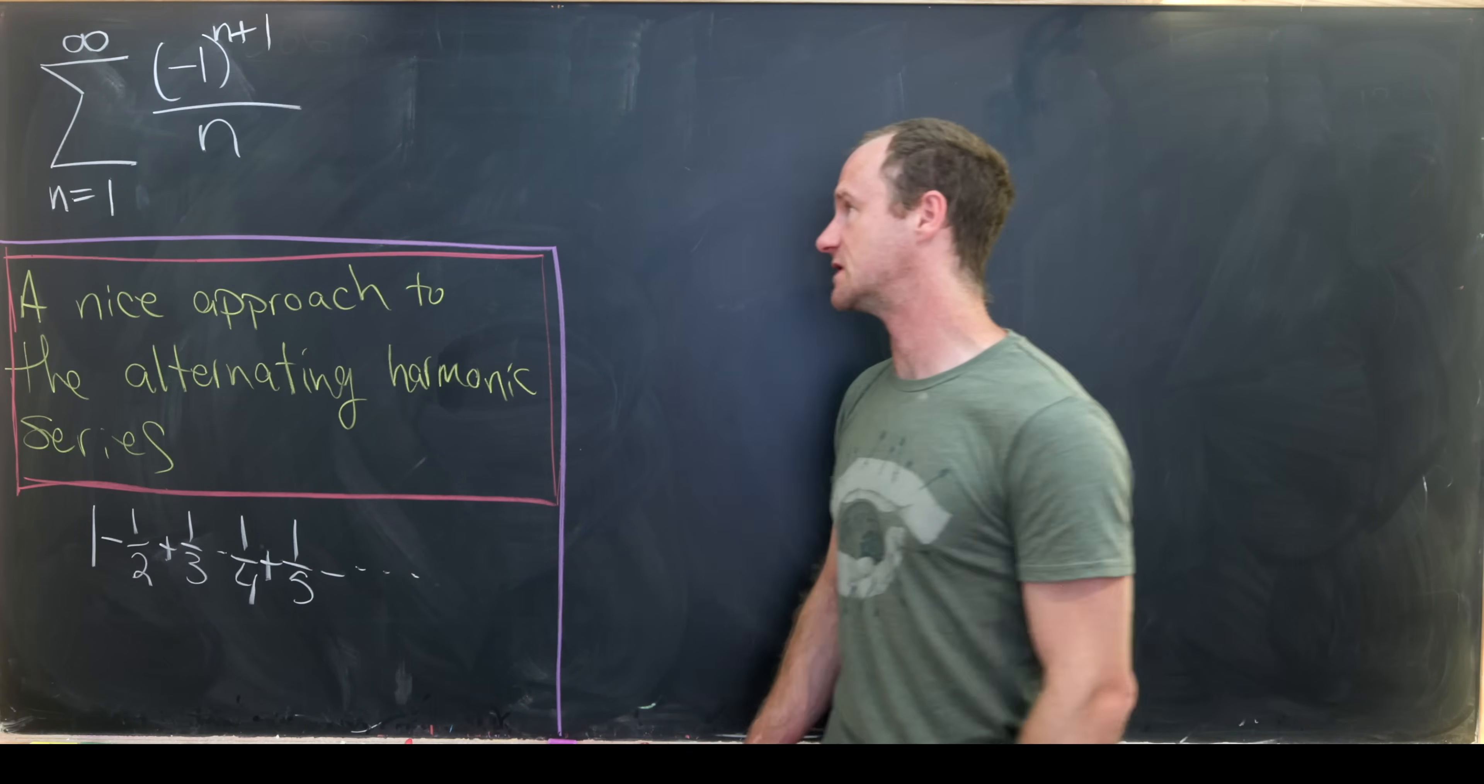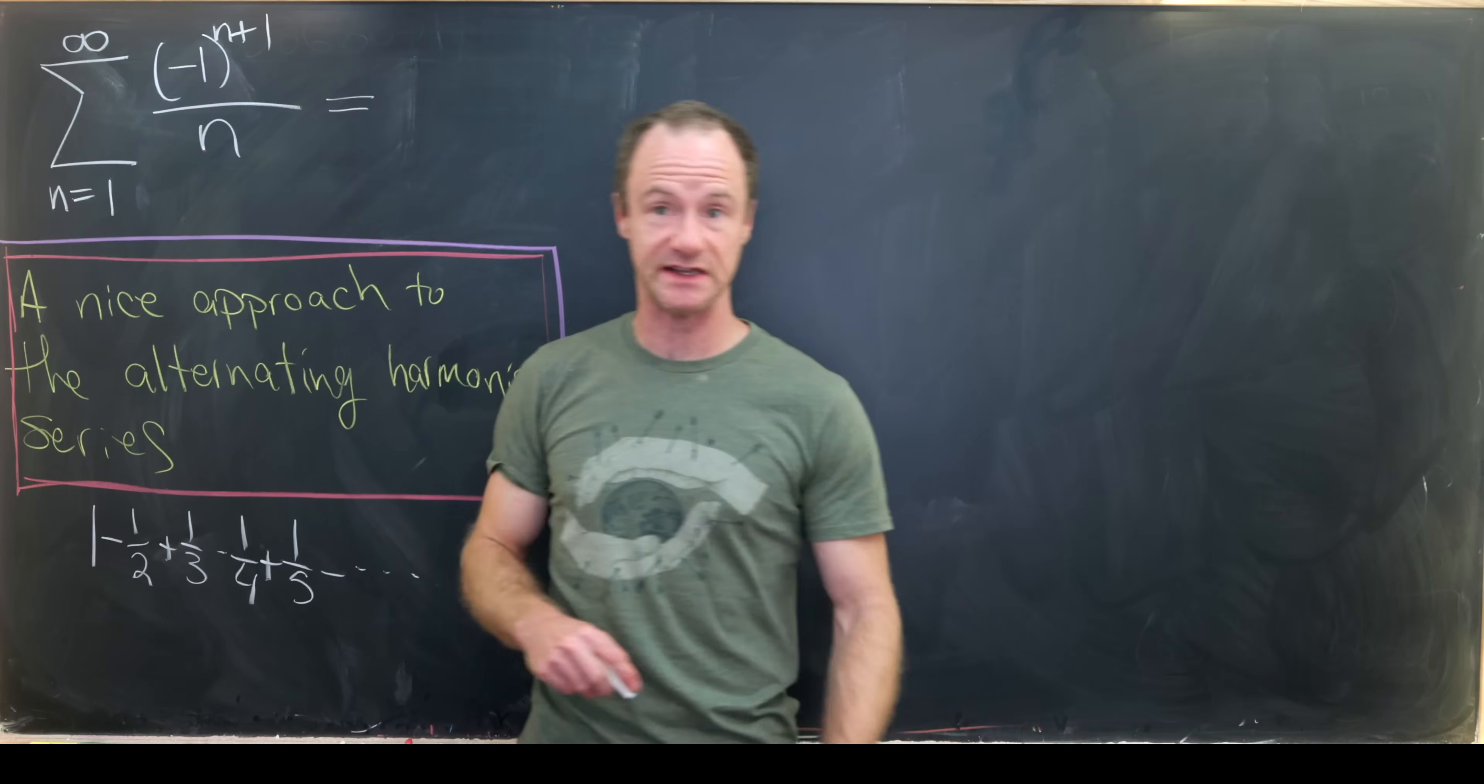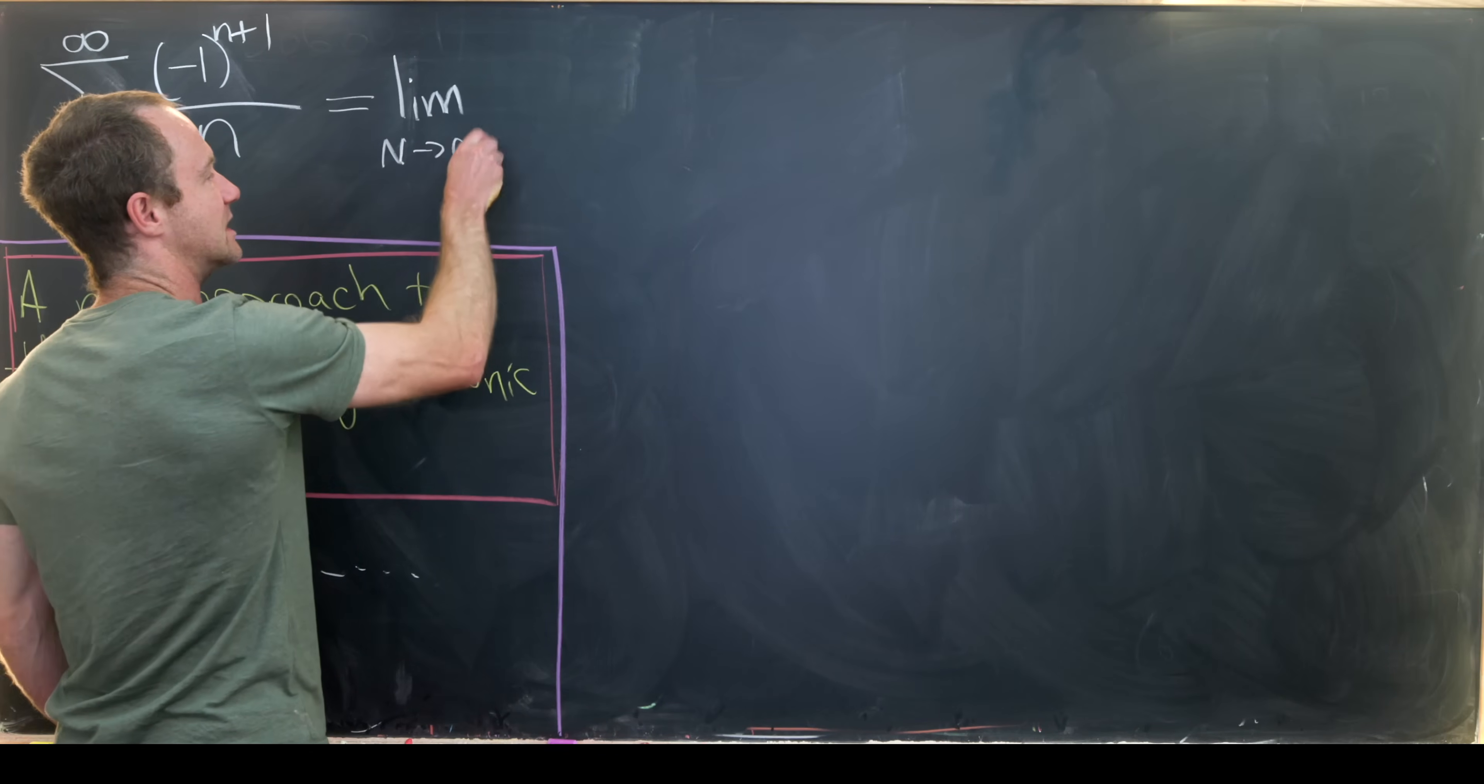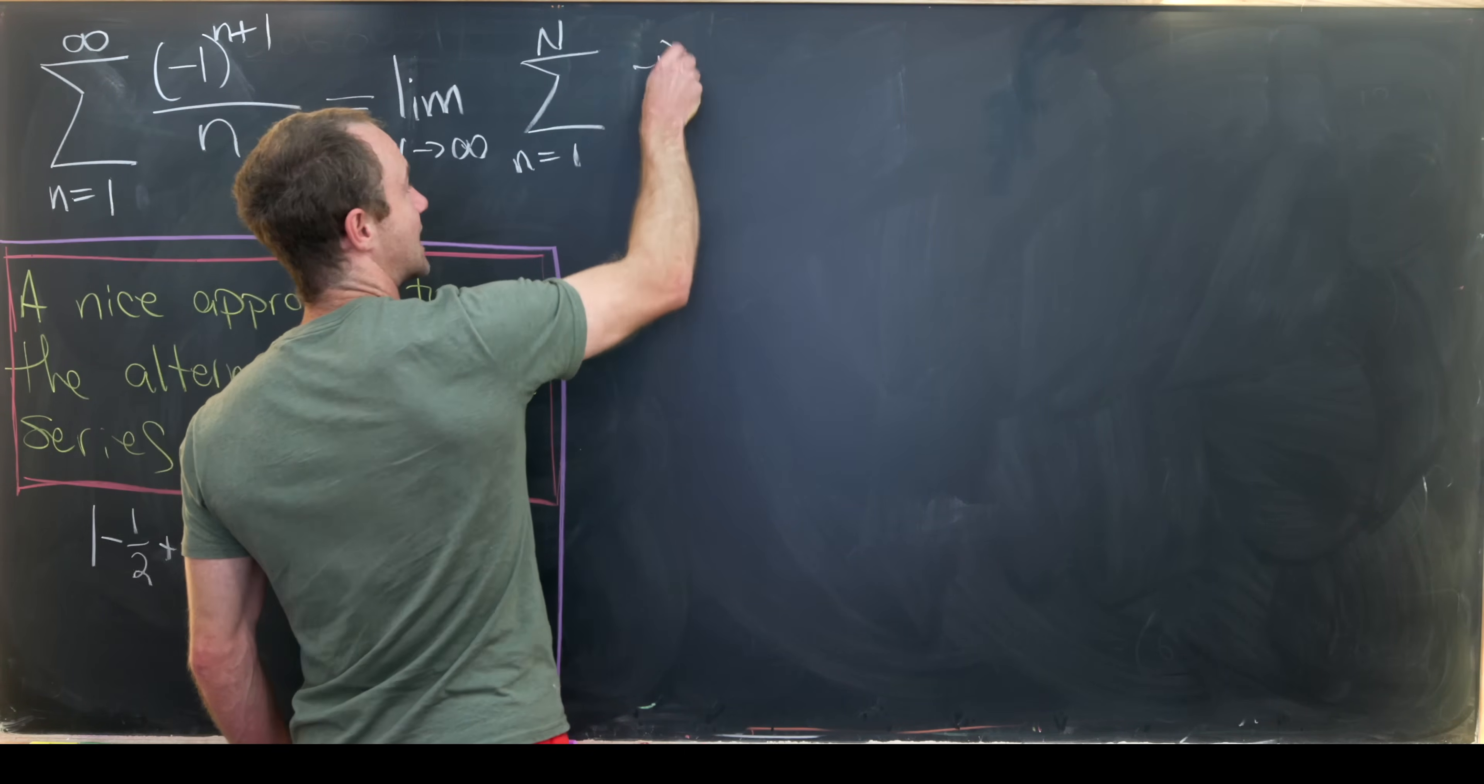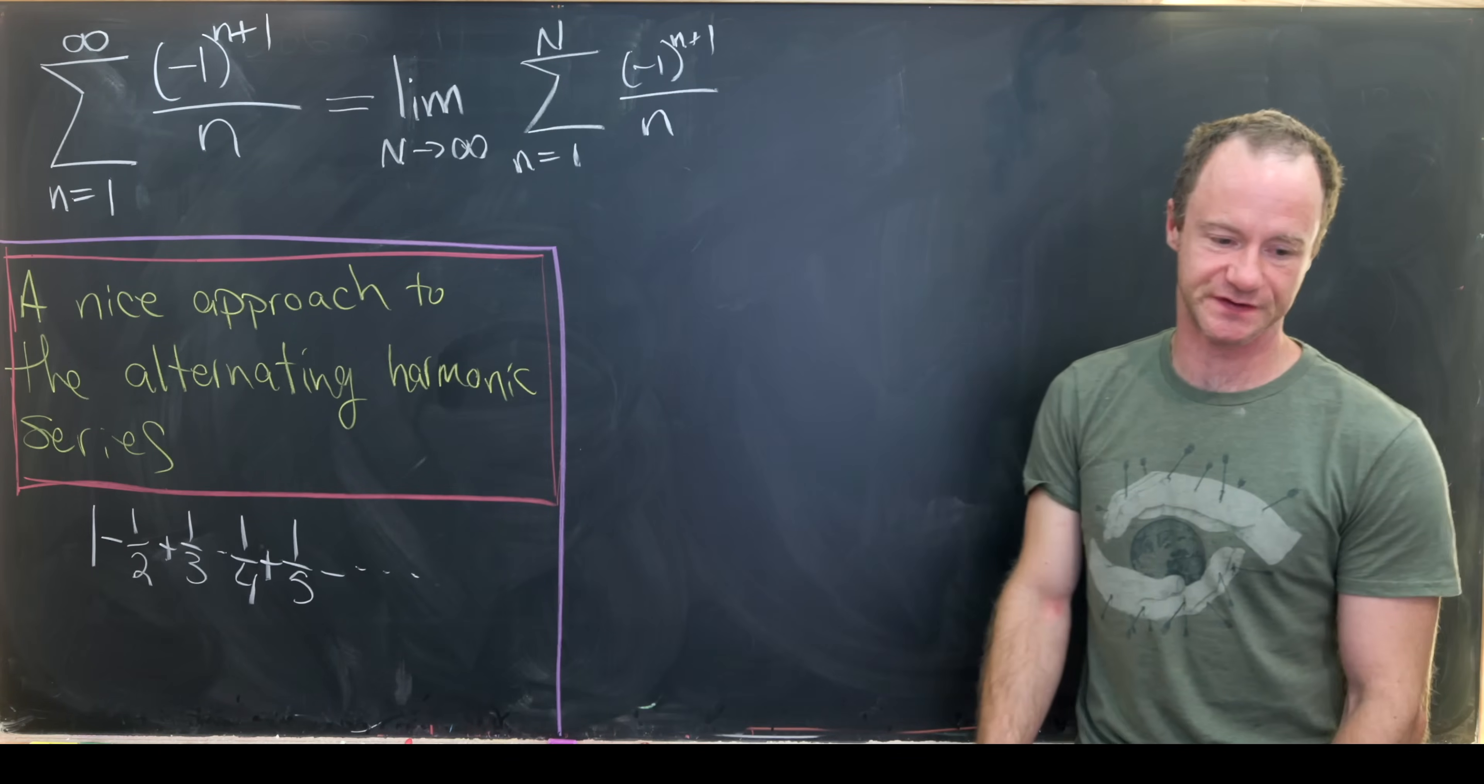So let's get to it. So the first thing that we want to do is recall that by the definition, the sum of an infinite series is the limit of the partial sum. So this is the same thing as the limit as capital N goes to infinity of the sum as little n goes from 1 up to capital N of (-1)^(n+1)/n. So those would be the partial sums.